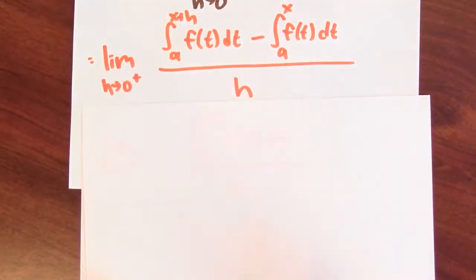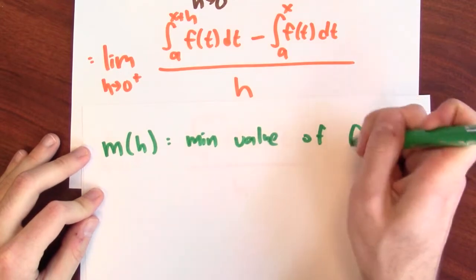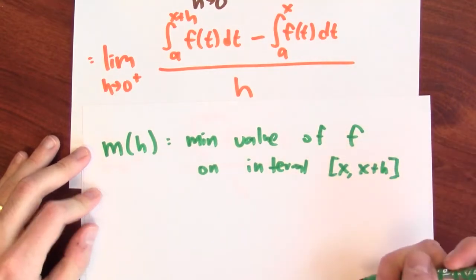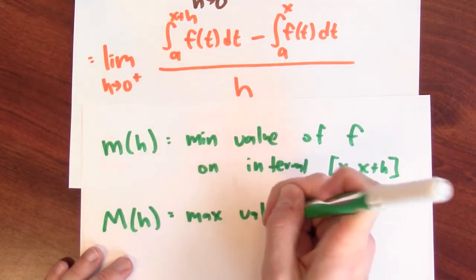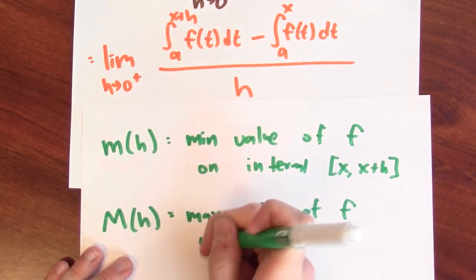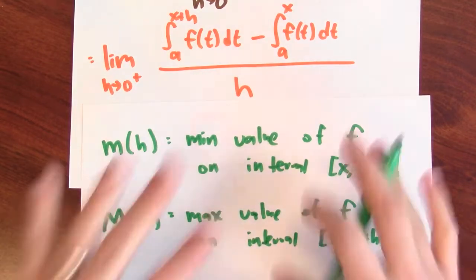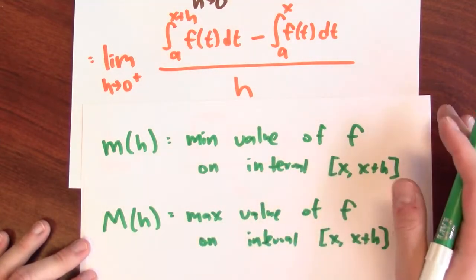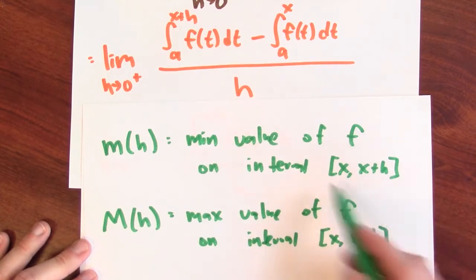Let's think about how large and how small that integral can be. I'll define little m(h) to be the minimum value of the function f on the interval from x to x+h, and big M(h) to be the maximum value of f on that same closed interval. You might be wondering how we know there is a minimum and maximum value — well, little f is assumed to be continuous, so by the extreme value theorem, there is a minimum and a maximum value on a closed interval.